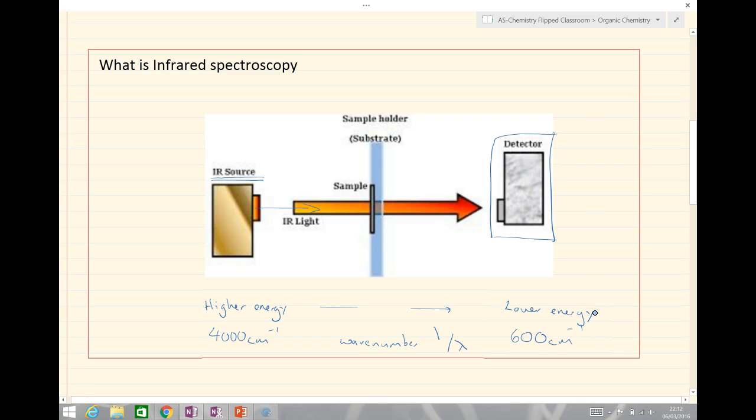If we don't put anything in the way, all of the infrared energy goes from the light source to the detector. However, if we put a sample between the source and the detector, the sample will absorb certain energies.